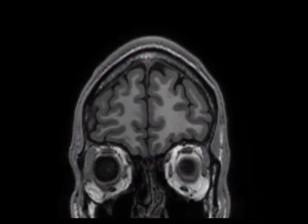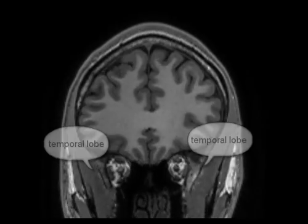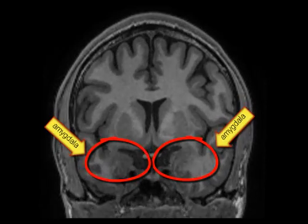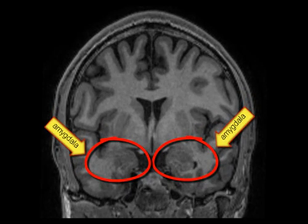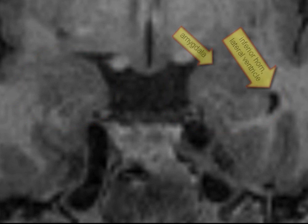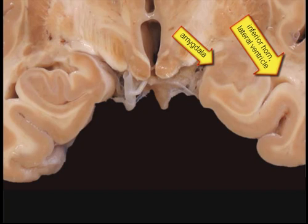The medial aspect of the temporal lobe contains a nuclear complex of grey subcortical matter, the amygdala. Note the inferior horn of the lateral ventricle. Here is a corresponding section of a real brain preparation. The cortex that covers the amygdala is called the uncus.